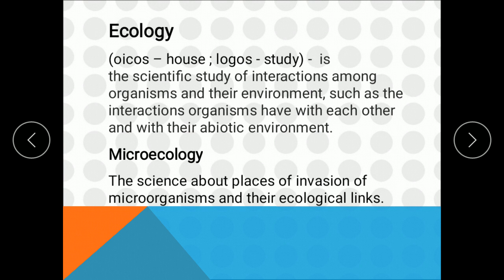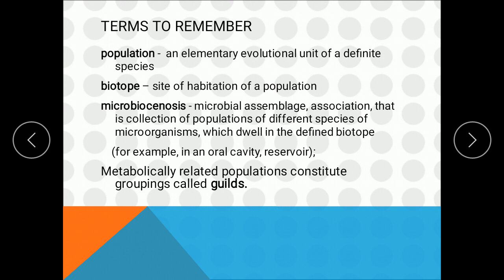When we have many numbers of organisms of a particular species, we call that a population. A biotope is the site of habitation of a population — the place where the population resides is known as the biotope. Microbiocinosis is the collection of populations of different species of organisms which are living together in a particular biotope.